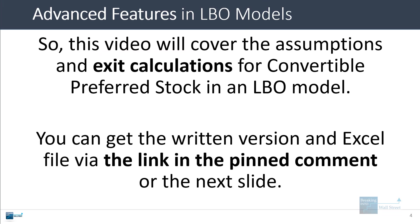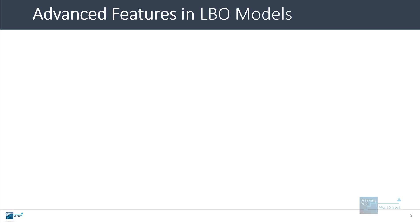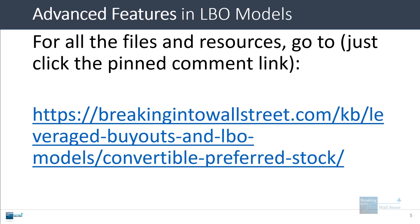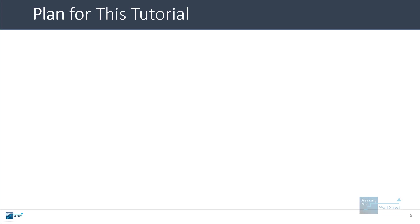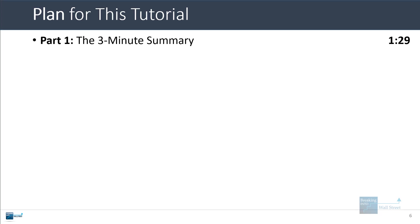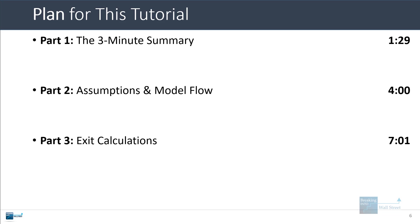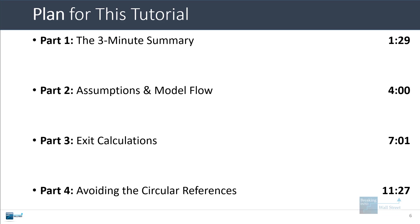You can get the written version and the Excel file via the link in the pinned comment. The URL is long so it'll be pinned below the video along with a link to our Cyber Week sale. In this tutorial I'll start with a three-minute summary of convertible preferred stock, then go into assumptions and model setup, then exit calculations, and finally how to avoid circular references.